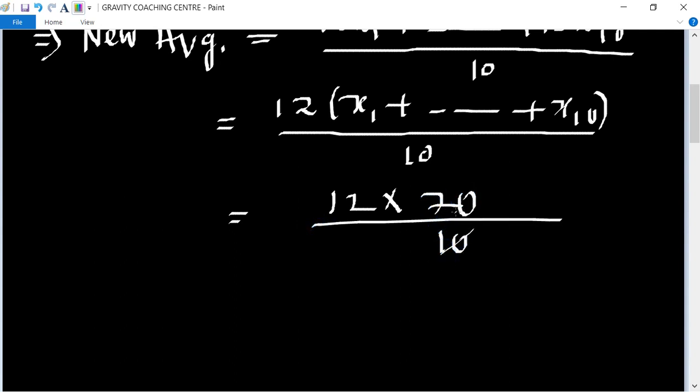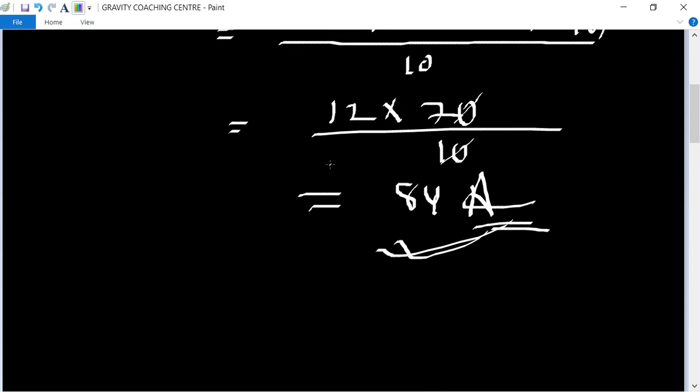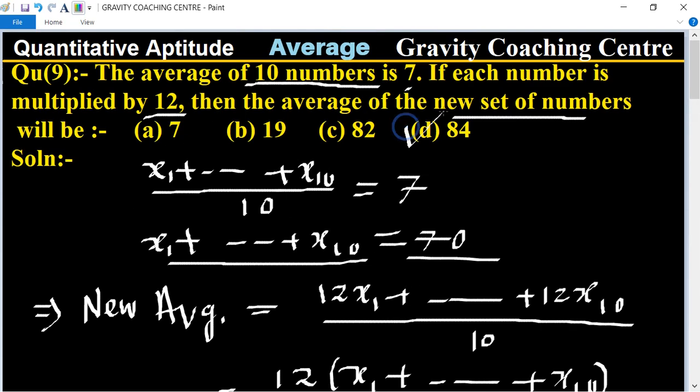× 70 / 10 = 12 × 7 = 84. So the new average is 84, which means option D is the correct answer.